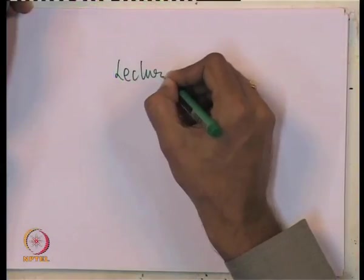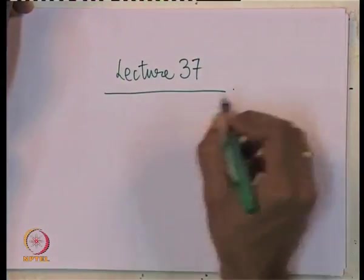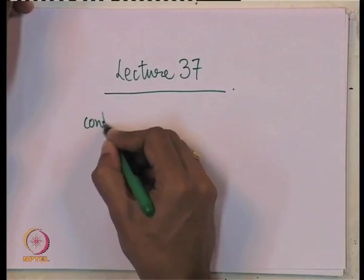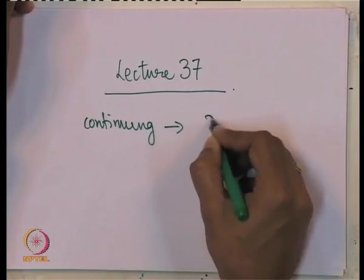We proceed with our simulation of a two machine system. In the previous lecture, I gave you an idea of how you can formulate the equations. We will go through all the equations once and then simulate. I will show you the results of the simulation for various disturbances like load change as well as faults. This is lecture number 37, continuing with our simulation of a two machine system.